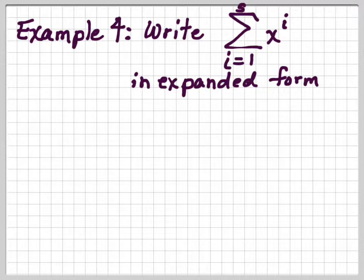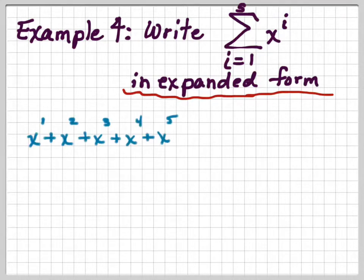Write this one in expanded form. Now, sometimes you're going to be left with a variable that you can't add, just add the numbers. In this case, we're going to start with i equals 1 and go up to i equals 5. So it would be x to the first power plus x to the second power plus x to the third power plus x to the fourth power plus x to the fifth power.